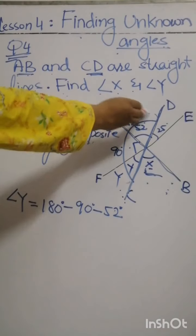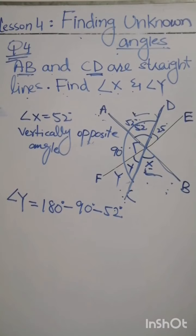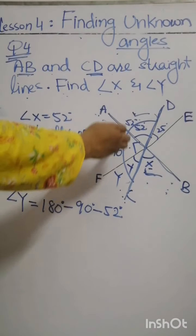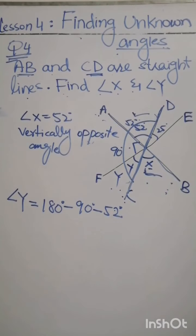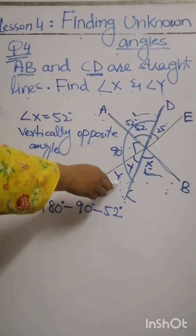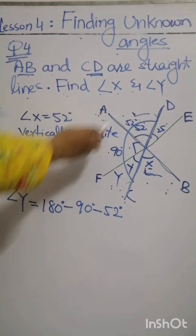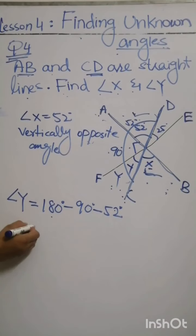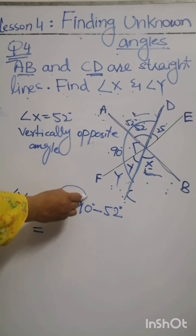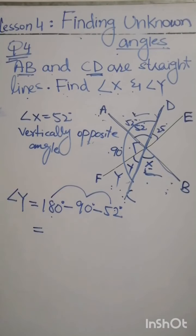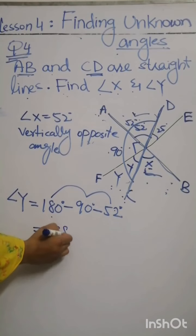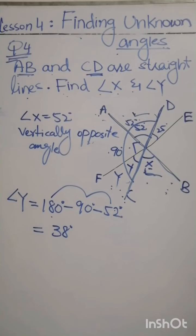Angles on a straight line add up to 180 degrees. If we have three angles whose sum is 180, and we know two of them, we subtract those two from 180 degrees. So 180 minus 90 minus 52 gives us 38 degrees. This is how we find angle x and angle y using vertically opposite angles and angles on a straight line.